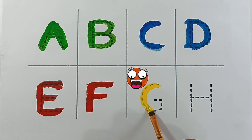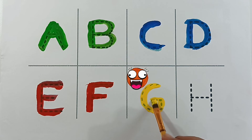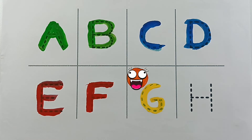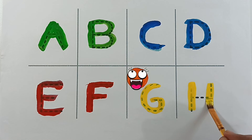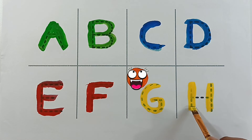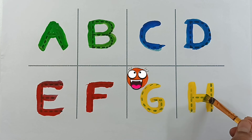Yellow color G. G for girl. Yellow color H. H for hen.